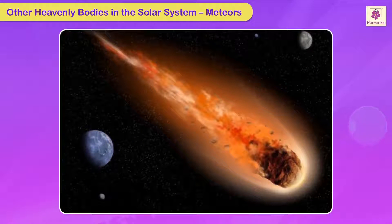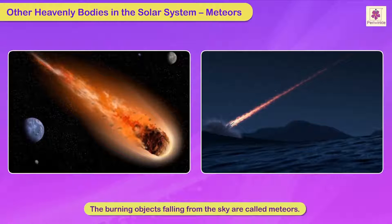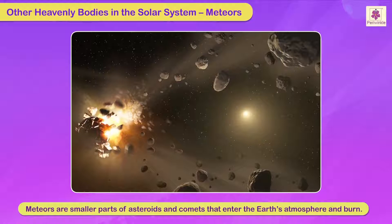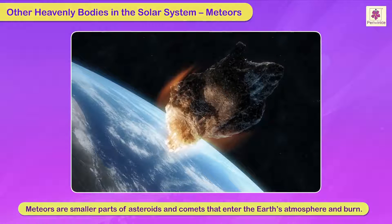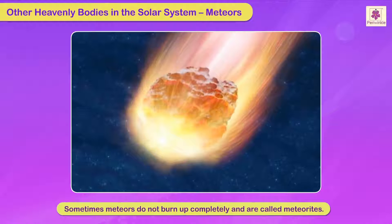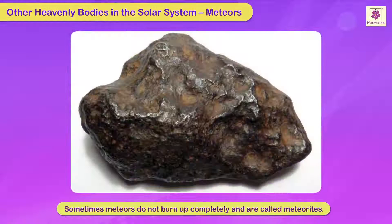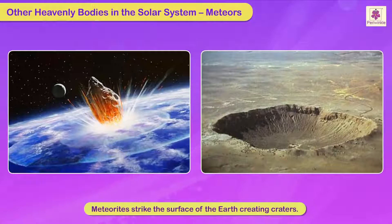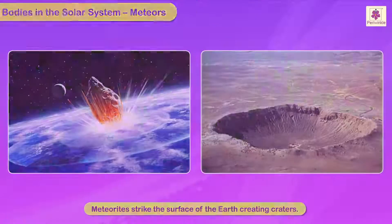Sometimes we see a burning object falling from the sky — these are called meteors. They are smaller parts of asteroids and comets that enter the Earth's atmosphere and burn up. They are known as shooting stars. Sometimes meteors do not burn up completely and are called meteorites. These meteorites strike the surface of the Earth, creating craters.